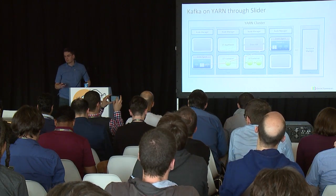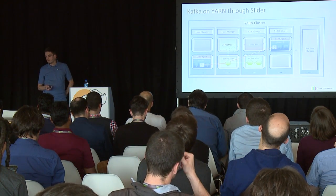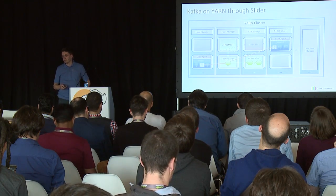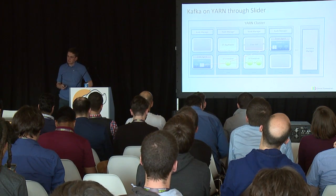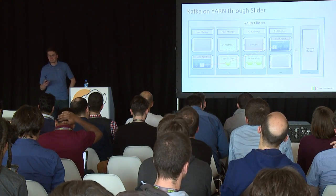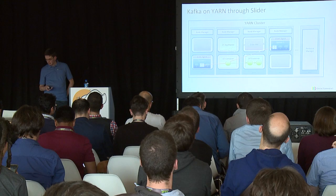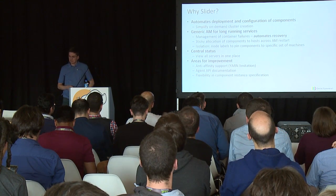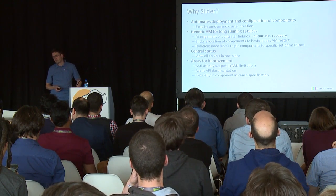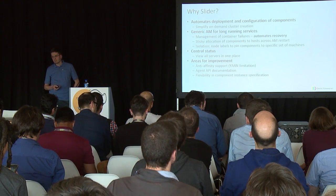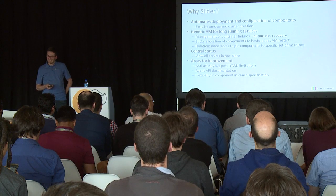With this architecture, you have one cluster which is all Yarn. You have an additional application master — the Slider application master for Koya. Each Kafka server is now inside a Yarn container, managed by a Slider agent. The Slider agent is essentially a control script written in Python to manage the server process and to bring it up and initially configure it. Slider automates the deployment and configuration of components — brokers are modeled as components. It simplifies on-demand cluster creation, making it easy to spin up a cluster for testing and tear it down.